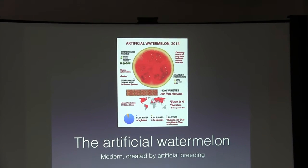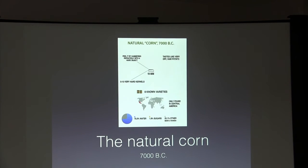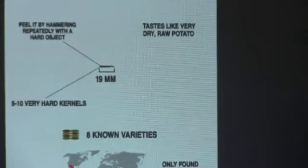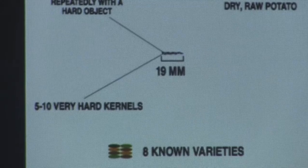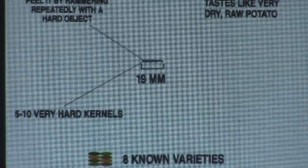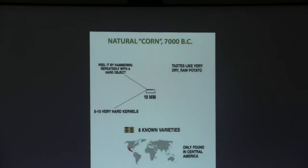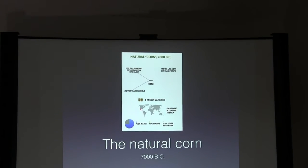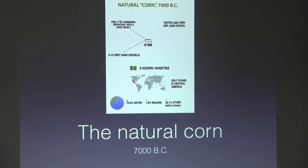Now I'm going to show you something you really won't believe — this is the hardest one yet. This tiny thing is only 19 millimeters big. You have to peel it by hammering it repeatedly with a hard object, and it tastes like a dry raw potato. It has 5 to 10 very hard kernels — and that might have just given it away. This is natural corn from 7000 BC. There are 8 known varieties, it's only found in Central America, and it's 75% water, 1.9% sugars, and 23.1% other, mostly starch.